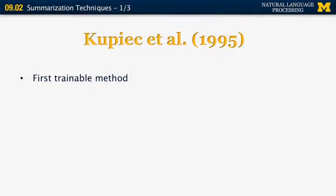One of the other interesting papers from the 90s is by Julian Kupiec — the same person behind the MURAX question-answering system. This paper appeared in ACL 1995. It was the first use of trainable machine learning techniques for sentence extraction, specifically using a naive Bayes classifier. Its target was a 20% extract of the input, and its collection was 188 documents from scientific journals.